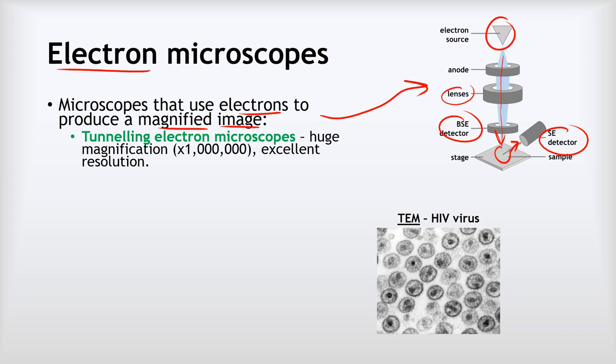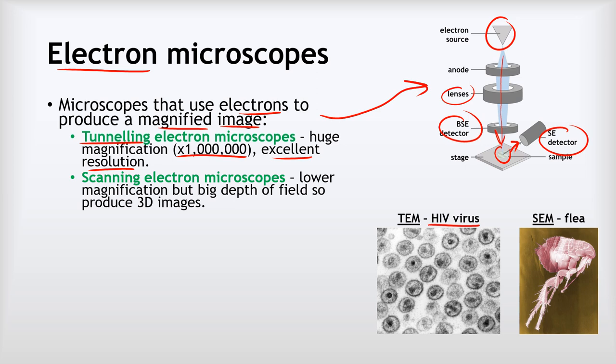Now there are two types of electron microscope. The first is a tunneling microscope. These have got huge magnification up to a million times magnification and excellent resolution as well. For example, this image down here from a tunneling microscope shows individual HIV viruses. These are far too small to be seen with any light microscope but a tunneling microscope gives us these really clear images. The other type is called a scanning electron microscope, and although these don't have such high magnification, they only go to 30,000 times, still way better than a light microscope, they have what we call a big depth of field so that can produce images that show the three-dimensional aspect of the things they're viewing. So if we look at this scanning electron micrograph of a flea you can see some aspect of the kind of three dimensional nature of the flea in that image.